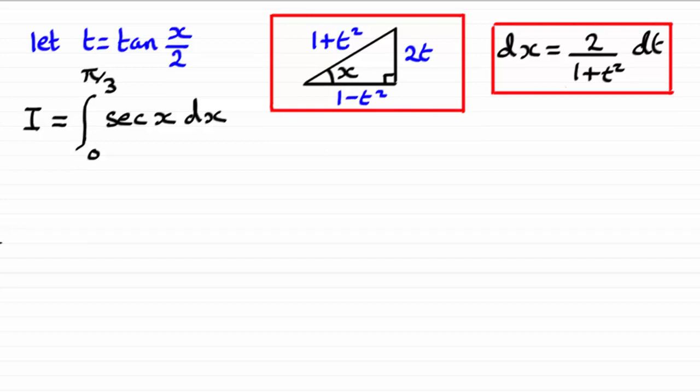Hi, now this is the second video in the series where I'm looking at the Weierstrass substitution, that is t equals tan x upon 2.